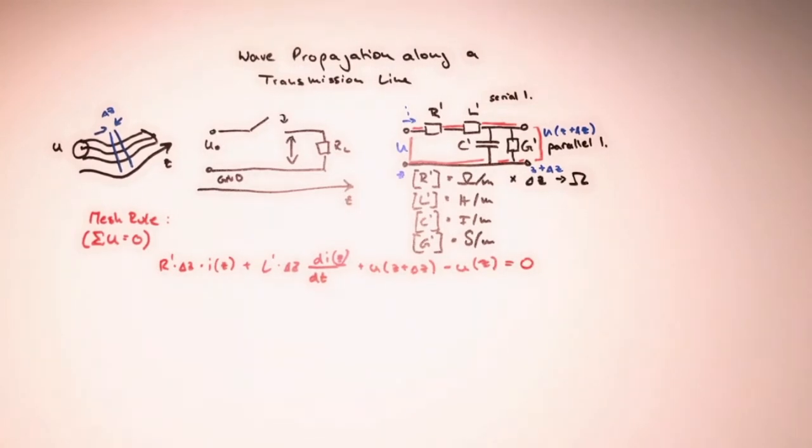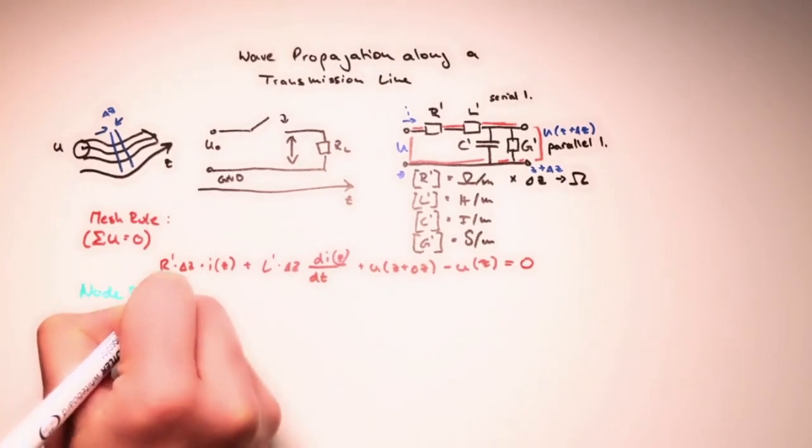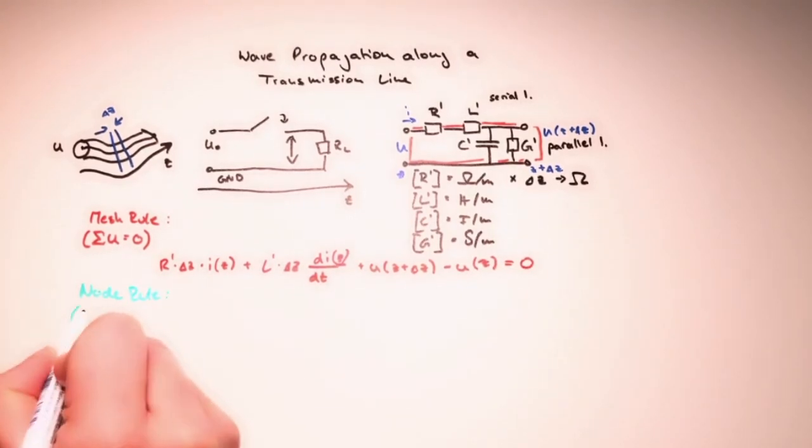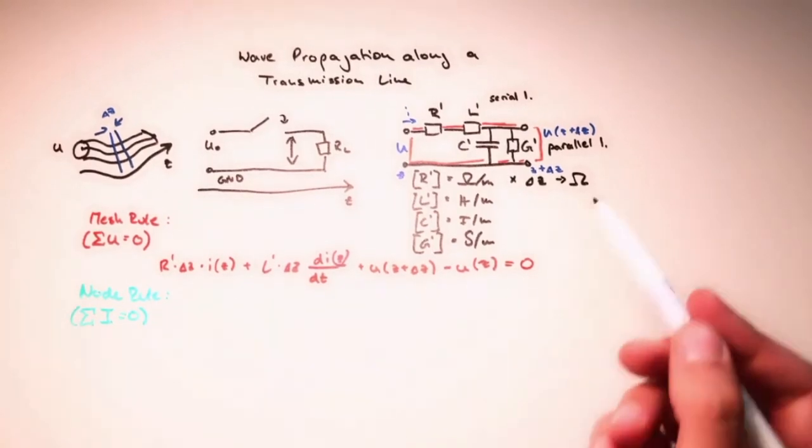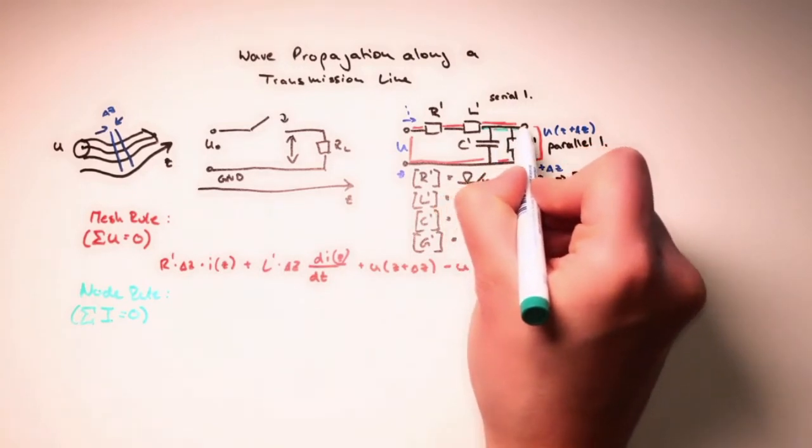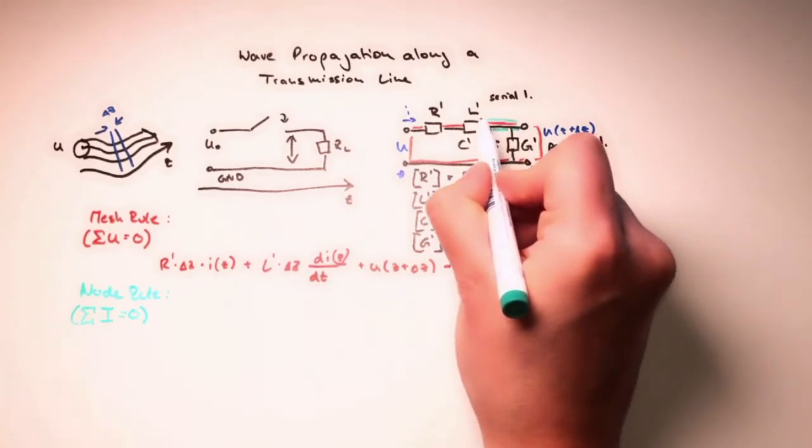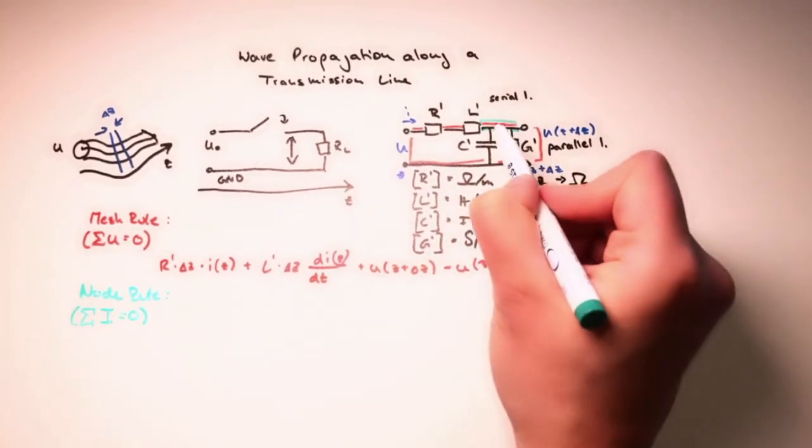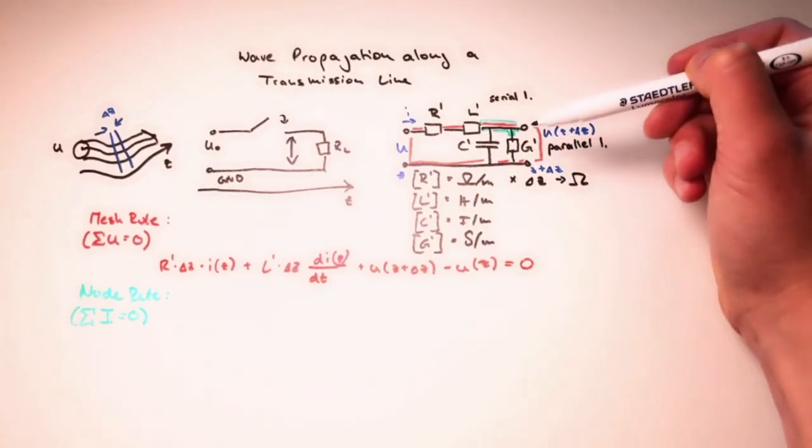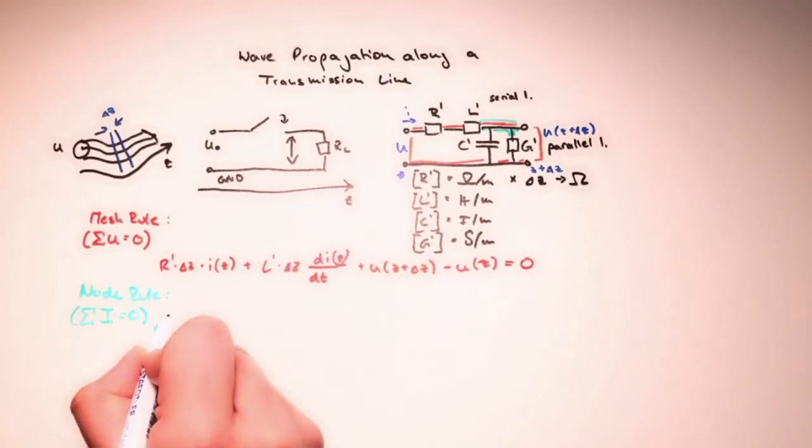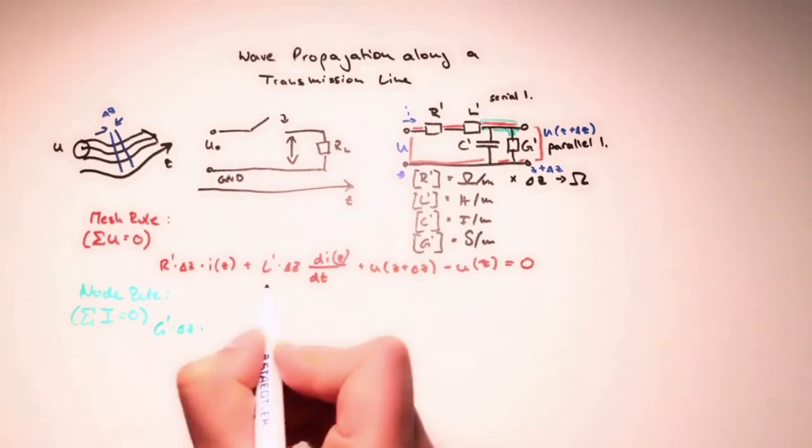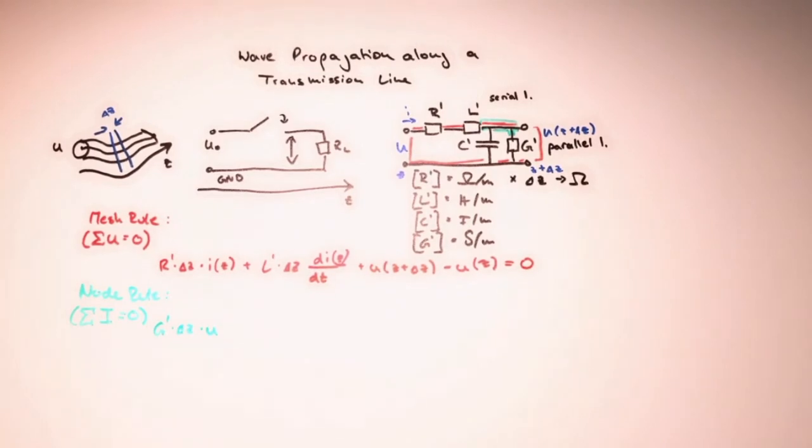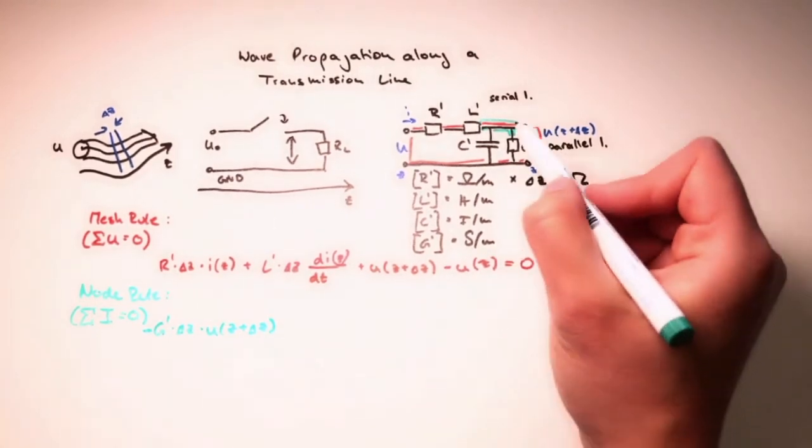Second, we take the node rule. And if you remember, the node rule states that when we go at one specific node, and we sum all the currents entering and leaving the node, so current this time, the sum has to be zero. And we will take this node. Then the first part is, let's start here because it's straightforward. We have current flowing out of our node here. And this is just g times delta z times voltage. Now, which voltage? It's the voltage at this point here, so z plus delta z. And since it's going out, let's label it with a minus so we don't lose our signs in the end. That was number one. Number two is some current we lose that is going here.